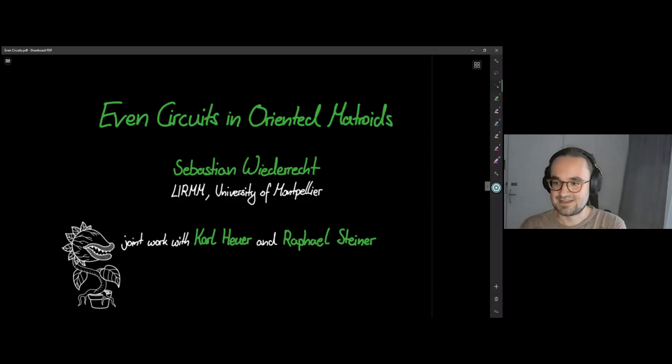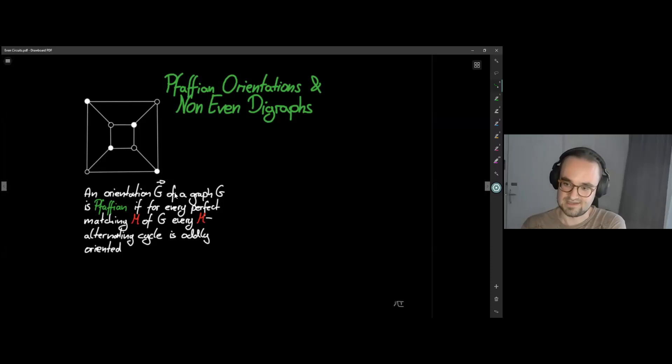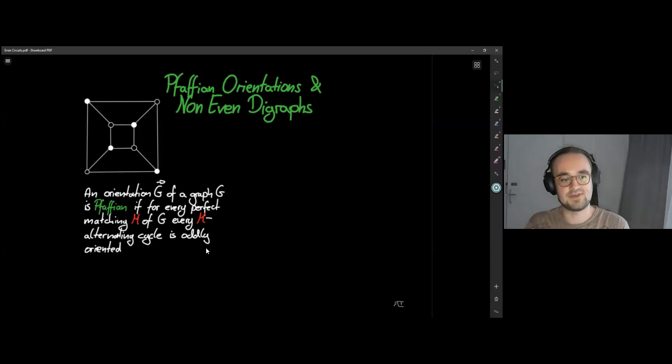So let's get started. To properly motivate our little journey here, we start with Pfaffian orientations and non-even digraphs — this is where the graphic version of the directed even circuit problem comes from. A Pfaffian orientation is an orientation of a graph G such that for every perfect matching, every M-alternating cycle — that is, edges are alternatingly inside of M and outside of M — is oddly oriented. And oddly oriented means the cycle has an odd number of edges going in one direction around the cycle and an odd number in the other direction.